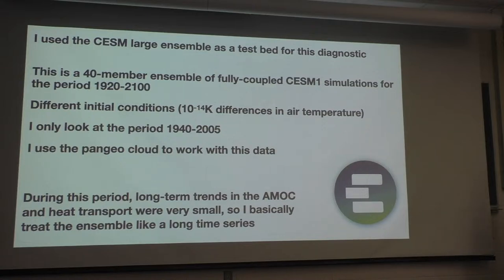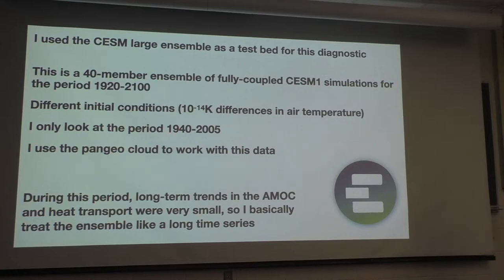I used Pangeo Cloud to work with this data. The CESM ensemble is not the real world, but it has similar decadal variability in subpolar ocean heat content. I looked at the scale of this variability in ocean heat content over the period and compared it to ECCO — the data-assimilating ocean model — and yes, it seems like there is similar variability going on in heat content and surface temperature. We're not expecting the decadal variability to be the same; by design it's not. We want ensemble members to have different decadal variability. The goal is just to understand the range of variability.